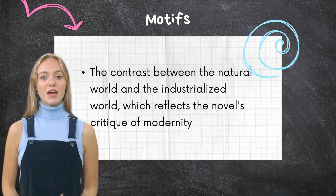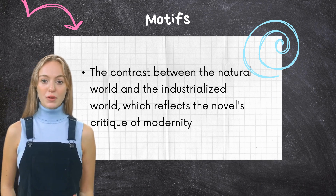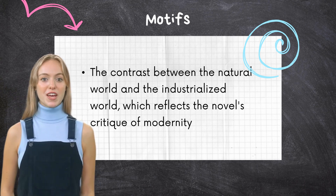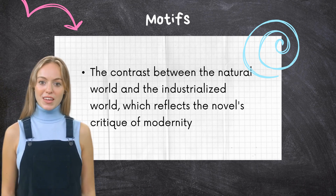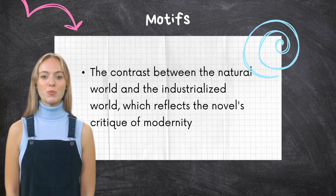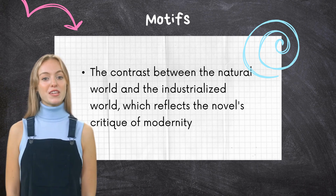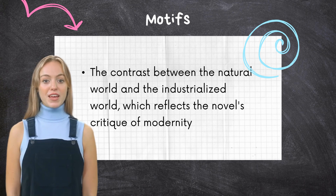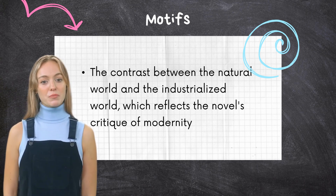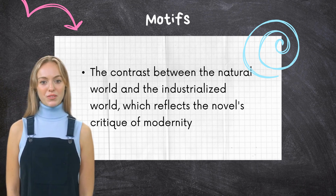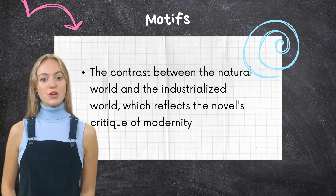In The Grapes of Wrath, John Steinbeck contrasts the natural world with the industrialized world, reflecting the novel's critique of modernity. The natural world is depicted as a source of life and vitality, providing solace and strength to the characters. The industrialized world is characterized by destruction and exploitation, with land stripped of resources, polluted by industrial waste, and human workers reduced to cogs in a machine. This contrast serves as a powerful symbol for Steinbeck's call for a return to a more harmonious relationship between people and nature, and for an equitable society that values all humans.